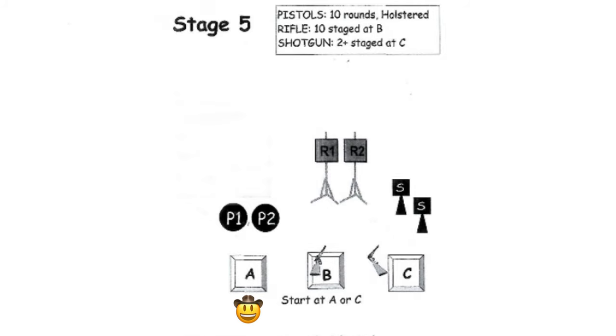From A with revolvers, engage the targets in a progressive or Lawrence Welk sweep, alternating on the two targets. At B with rifle, repeat the revolver instructions. At C with shotgun, knock down the targets.